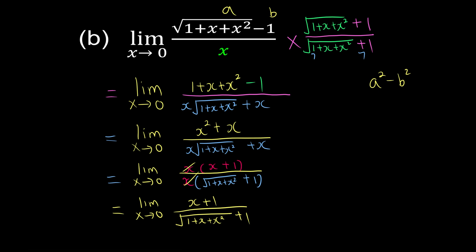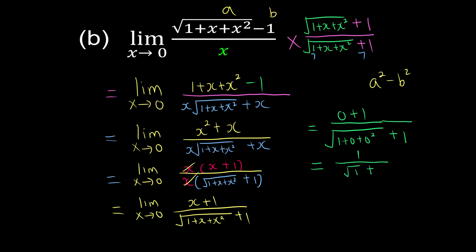Now the denominator is no longer 0, so we can substitute x equals 0. We get 0 plus 1 over square root of (1 plus 0 plus 0 squared) plus 1. That simplifies to 1 over (square root of 1 plus 1), which is 1 over 2. So the final answer is 1/2.